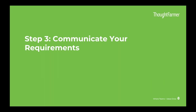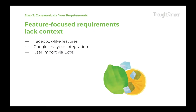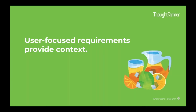Step three: communicate your requirements. Language is very important here, and how you position those requirements. Sometimes you get stuck in a feature-focused mode — we want Facebook-like activity screens, we want Google Analytics integration, we want a staff directory. What you really want to do is also communicate the who, the why, and the how. User-focused requirements can provide that type of context.